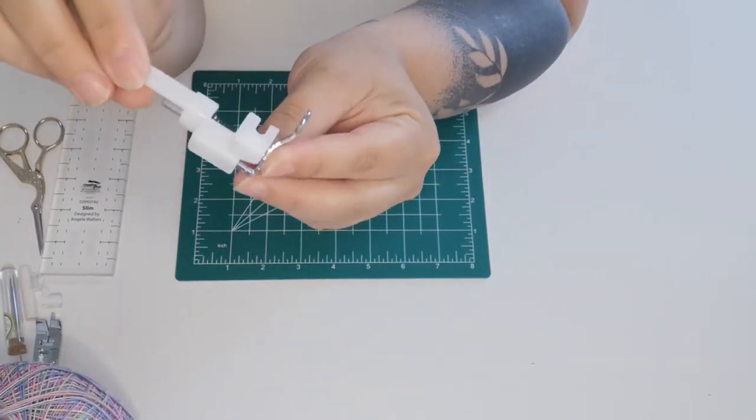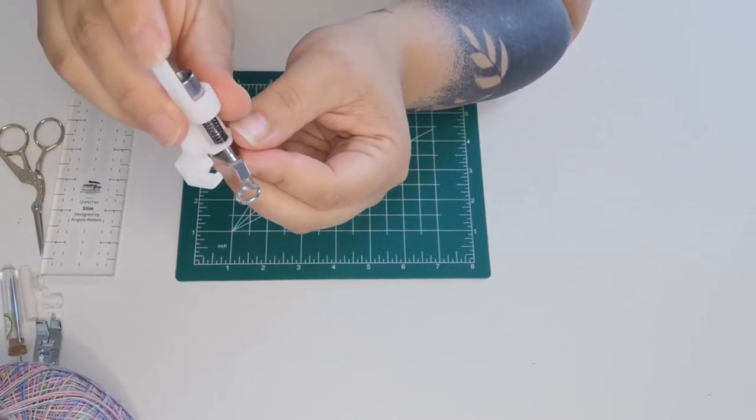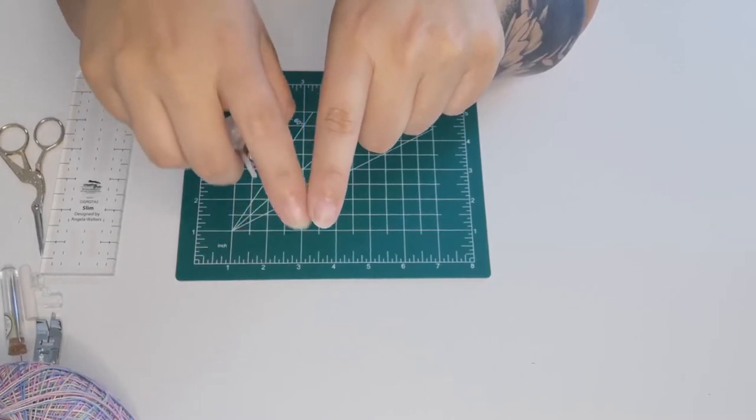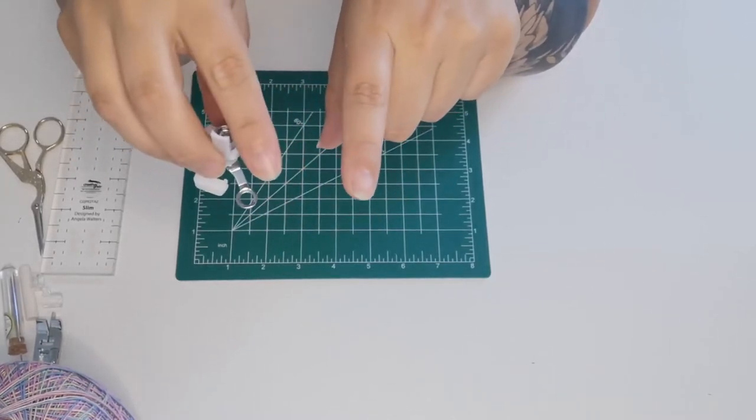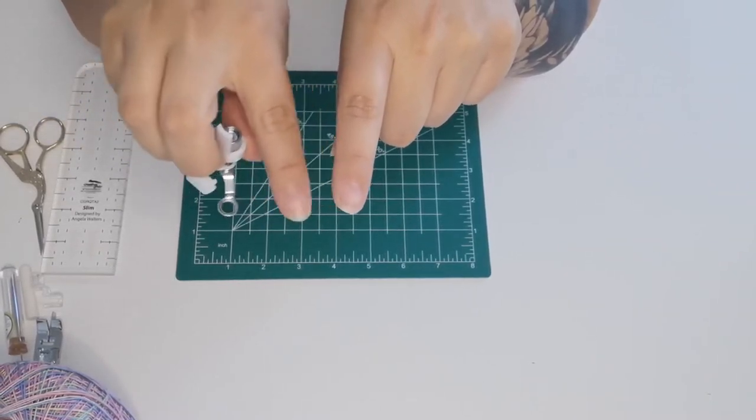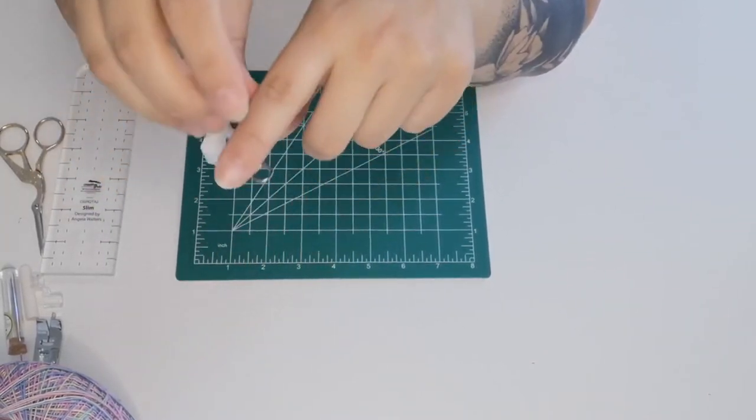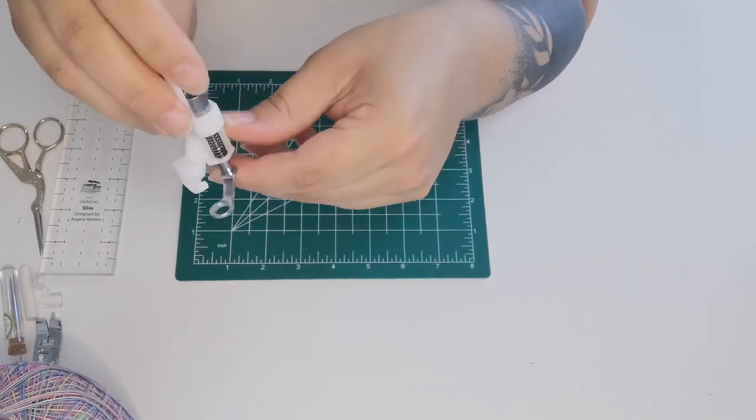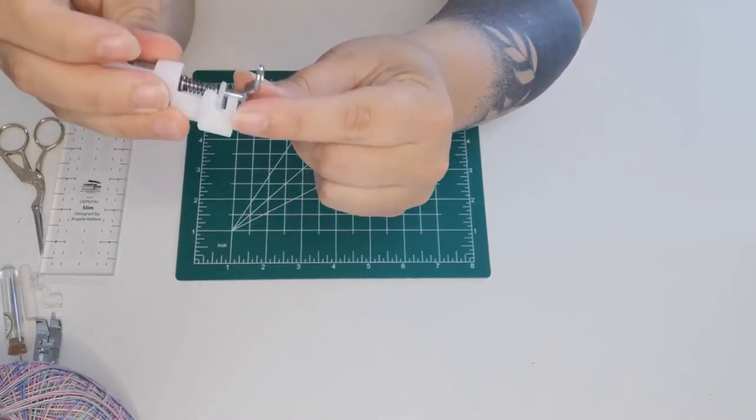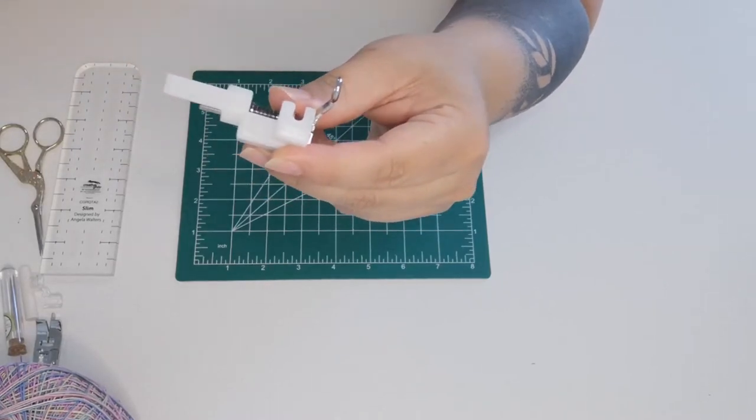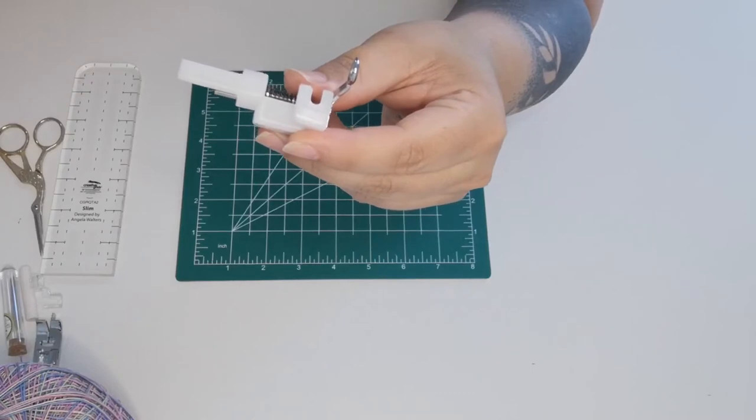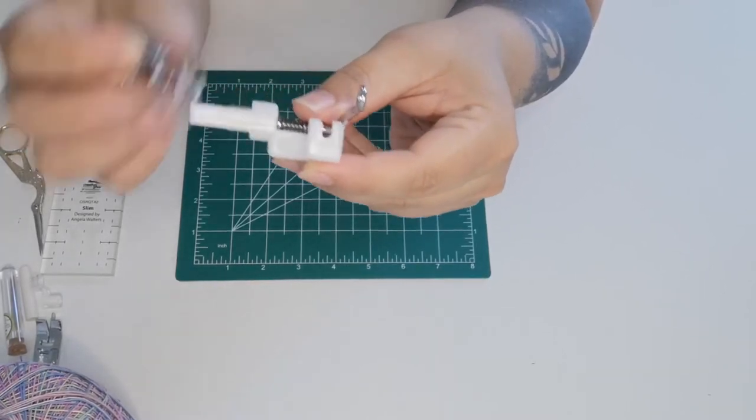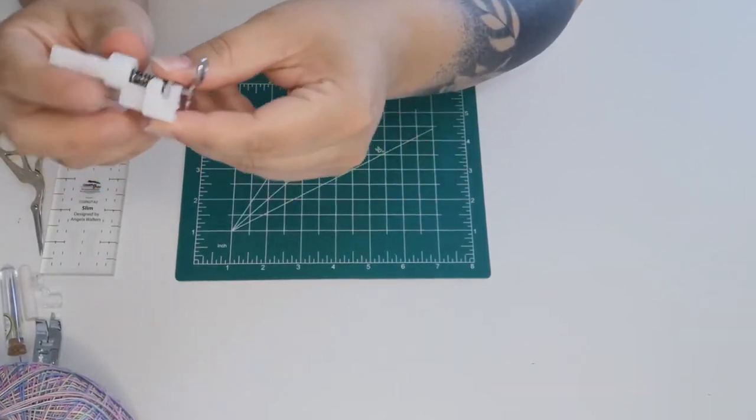This is called, well the real name for it is a darning foot. Think about like if you were gonna fix a hole in a pair of pants - you wouldn't want to go zigzag back and forth. This opens it up and it allows you to move the fabric underneath the needle rather than the other way around. You could go over the same spot over and over again. But this is also awesome for free motion quilting. To use this you put it on the same way as you would any other foot. You know the part of your machine that you snap your presser foot into, that's where it screws into.